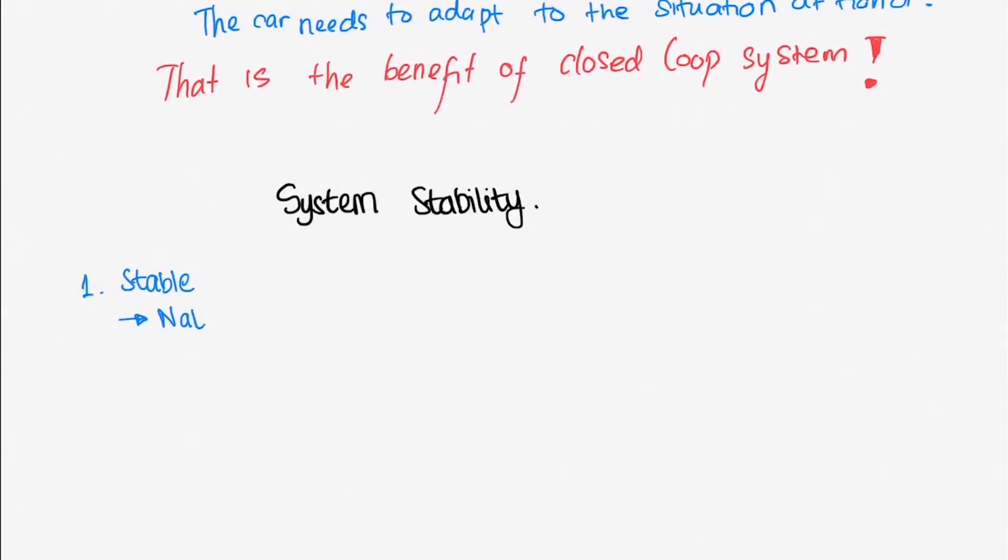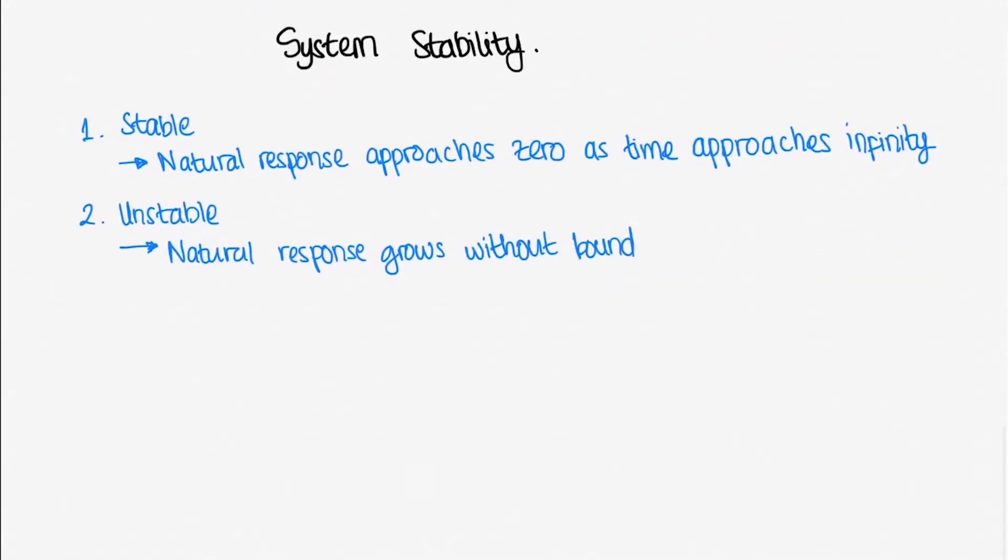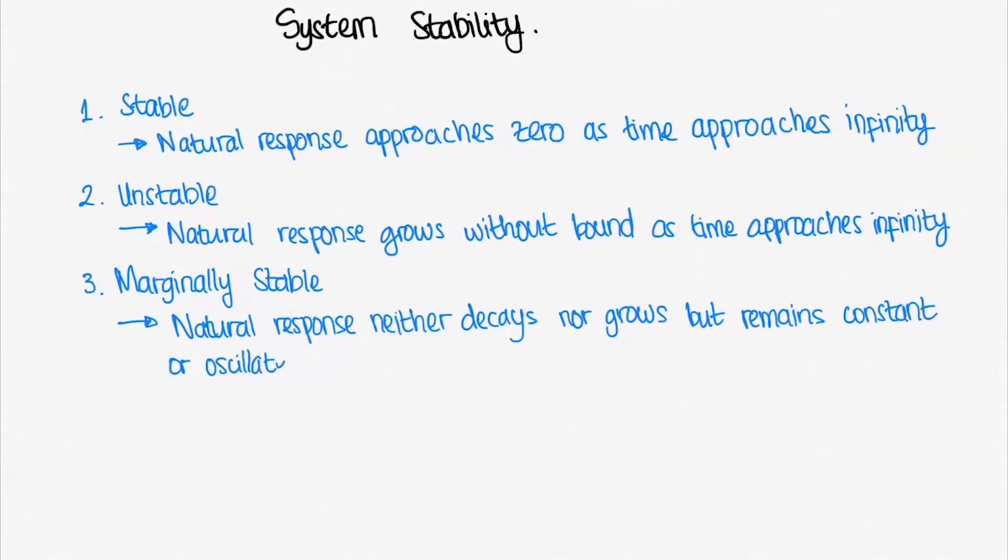The definition of a stable system is a system whose natural response approaches zero as time approaches infinity. Unstable systems, however, have responses that grow without bounds as time approaches infinity. While in marginally stable systems, the natural response neither decays nor grows. It oscillates as time approaches infinity.